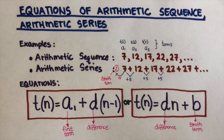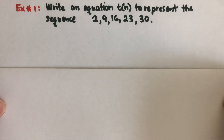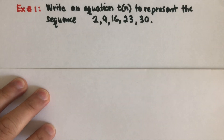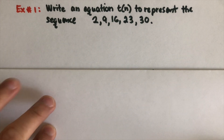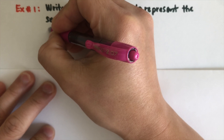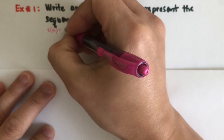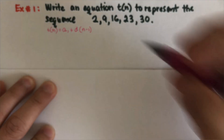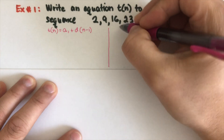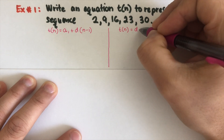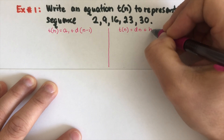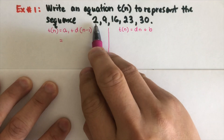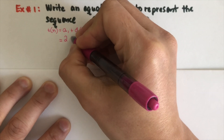Let's work through an example to see how these formulas work. We are given a sequence and we need to find the equation for t of n. Using the first formula, t of n equals the first term plus the difference times (n minus 1). The second formula is t of n equals d times n plus b, the zeroth term. Let's work on the first equation. The first term here is 2, so we write 2 plus the difference times (n minus 1).